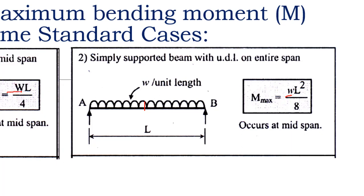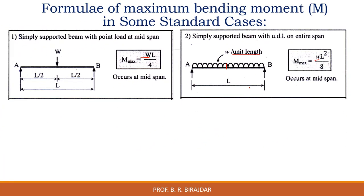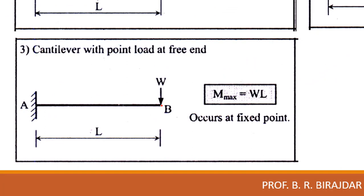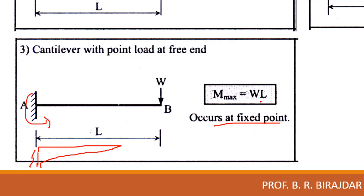Here W is the point load, w is load per unit length, and L is the total length of the beam. For a cantilever beam with a point load W at the free end, the maximum bending moment occurs at the fixed end. The bending moment diagram increases toward the fixed end, and the maximum bending moment value is W × L, which is the anticlockwise moment at the fixed support.